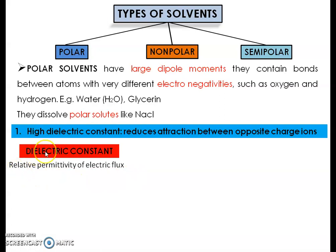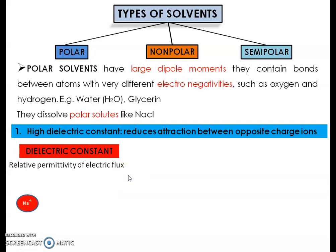The dielectric constant is the relative permittivity of electric flux. The literal meaning is that it allows electrical current to pass through. If a solvent has a high dielectric constant, it allows current to pass through it. For example, when sodium chloride is added to water, it dissociates into Na⁺ and Cl⁻ ions. Whenever there are positive and negative ions in a solution, electric current can flow easily — that is the dielectric constant. If there are no such ions, there is no electric current and no permittivity of electric flux. So if the dielectric constant is high, there are more ions and more transfer of electric current.